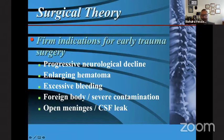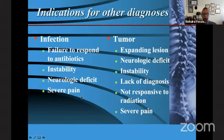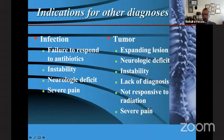The firm indications for early trauma surgery are a progressive neurologic deficit, enlarging hematoma, excessive bleeding, presence of a foreign body, or a CSF leak. Relative indications are incomplete neurologic injury with distal or sacral sparing, severe deformity or instability — particularly with ligamentous laxity — significant neural compression such as from a herniated disc or retropulsed bone fragment, or a patient's inability to tolerate an orthosis. Indications for operating in infection include failure to respond to antibiotics, instability, neurologic deficit, or severe pain. In tumors: an expanding lesion, neurologic deficit, instability, lack of a diagnosis, tumor not responsive to radiation, or severe pain.